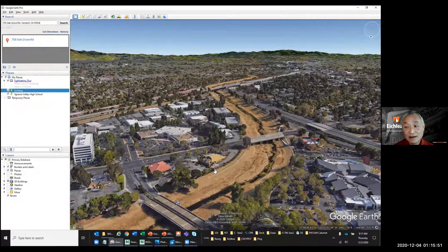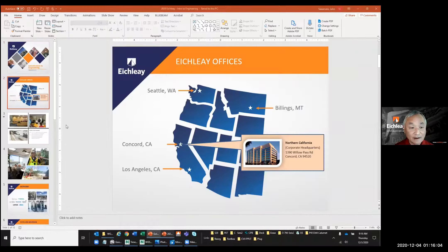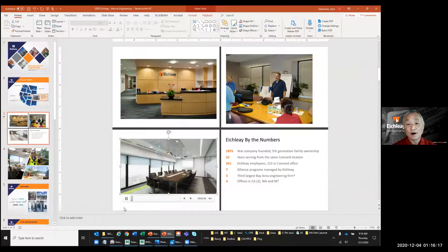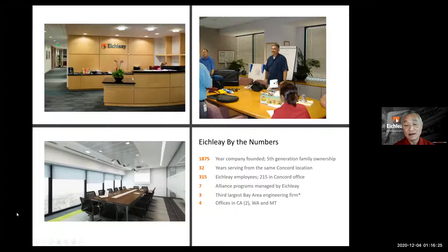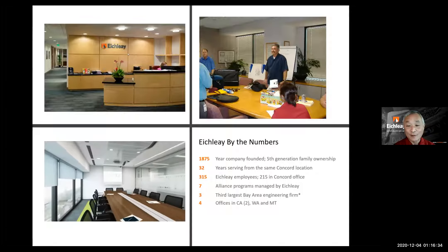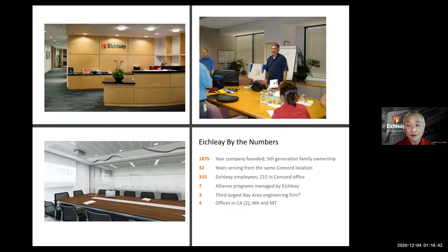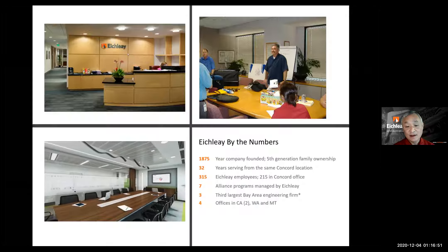We've been in this office since about 1987-1988 when we moved in. A little bit about Ikely: our company is the oldest and largest engineering company in the United States — not the largest by numbers, but the longest running. We were founded in 1875, putting the company at over 140 years old. It is still family-owned, privately held by the Ikely family, with a fifth-generation owner.